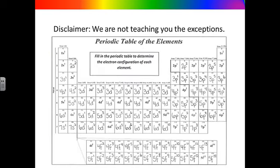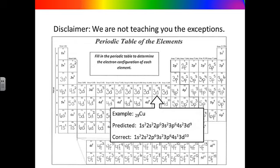At this point, I have to make a disclaimer — we are not teaching you the exceptions to the Aufbau principle. For example, copper, element number 29, has a predicted electron configuration of 1s2, 2s2, 2p6, 3s2, 3p6, 4s2, 3d9. However, the correct electron configuration of copper is 1s2, 2s2, 2p6, 3s2, 3p6, 4s1, 3d10. There are a number of exceptions, but we are going to ignore them in this class.